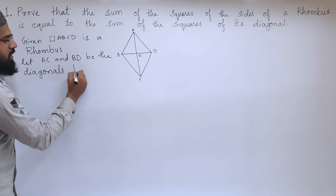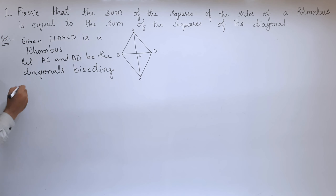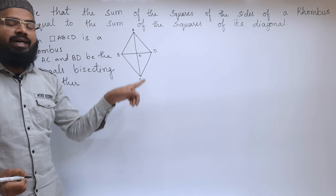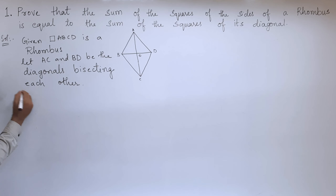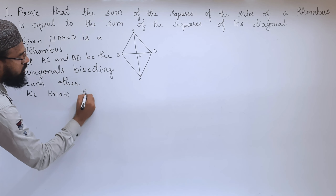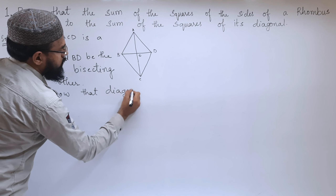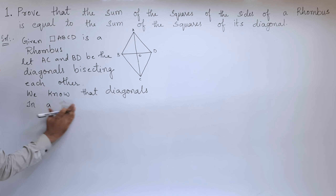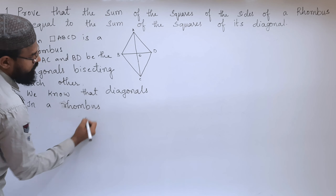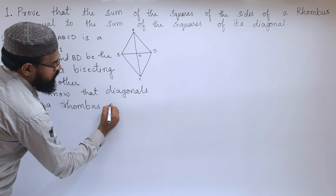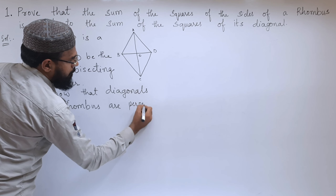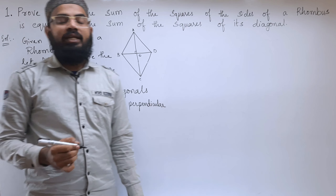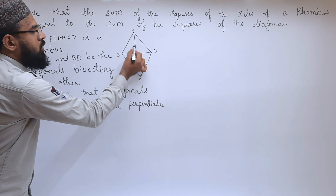These two diagonals are bisecting each other. We know that in a rhombus, diagonals are perpendicular to each other. That means the diagonals form a 90-degree right angle between them.